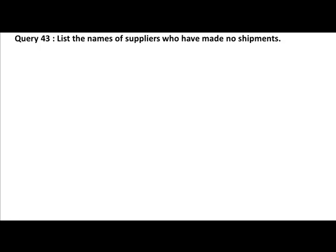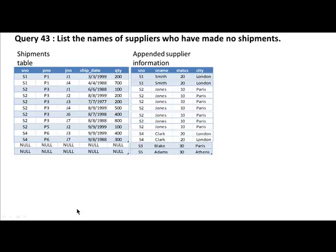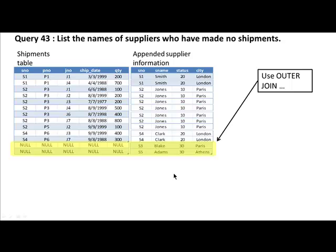Now we come to another kind of query. We can say: list the names of suppliers who have made no shipments. Remember, Adams and Blake have not made any shipments — we want to list only those two names. Blake and Adams have made no shipments, so when you join the two tables your super-table is going to show null for their shipment fields. To get the information for Blake and Adams, you first use the outer join — you need an outer join, otherwise these two will not appear at all. Then you select only those rows for which there are no matches, just selecting the supplier names.